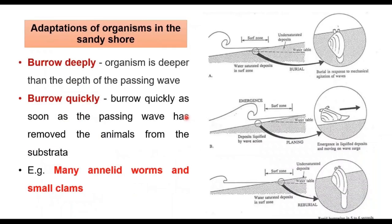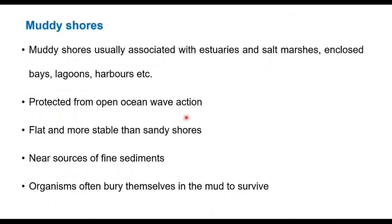Looking at the adaptations, organisms — whether worms, clams, or crabs — have to burrow deeply as the waves pass, and then safeguard themselves to protect from predators. Another mechanism is the ability to burrow quickly so that whenever waves are passing they can burrow deep or burrow quickly to get away from the next wave. Examples of such organisms are annelid worms and clams.